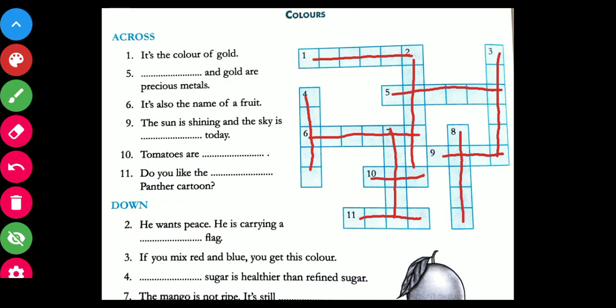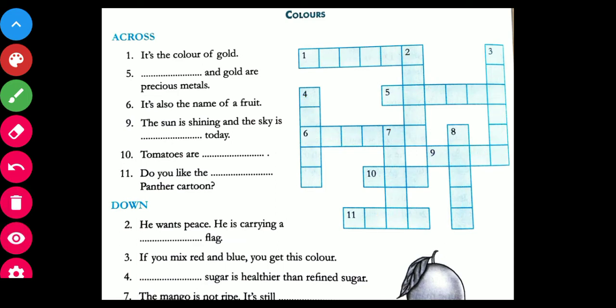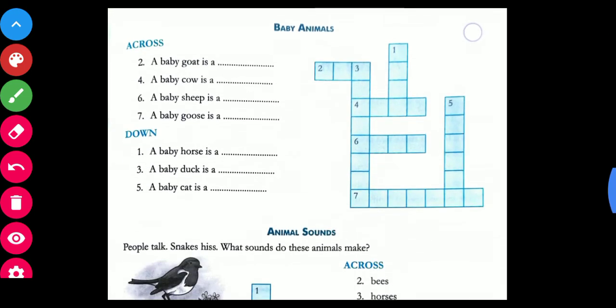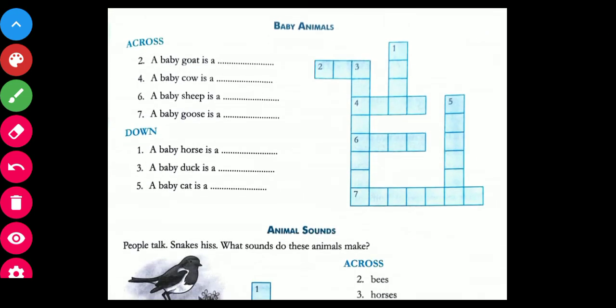This is how you have to write the answers in the crossword. The first one has been done. The second is baby animals. Now let us come to baby animals across. First one, that means the second we will take in across.